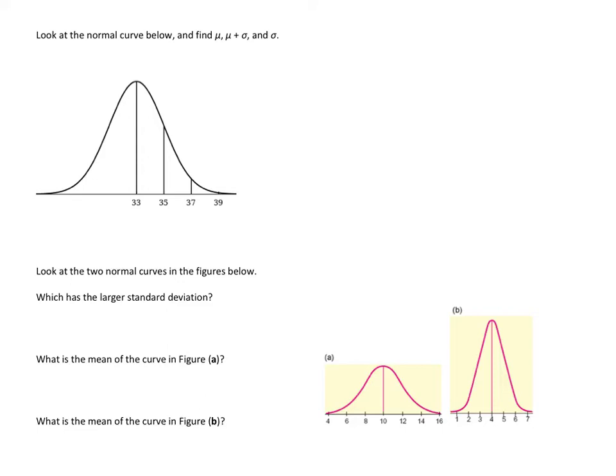We're going to start looking at normal curves, or what you've heard in the past more likely as bell curves. They're going to be synonymous with each other. I'm going to go over some of the problems that you'll see in your homework set, starting with the normal curve below. We've got a bell curve or normal distribution sketched, and there are numbers placed at certain intervals underneath the curve.